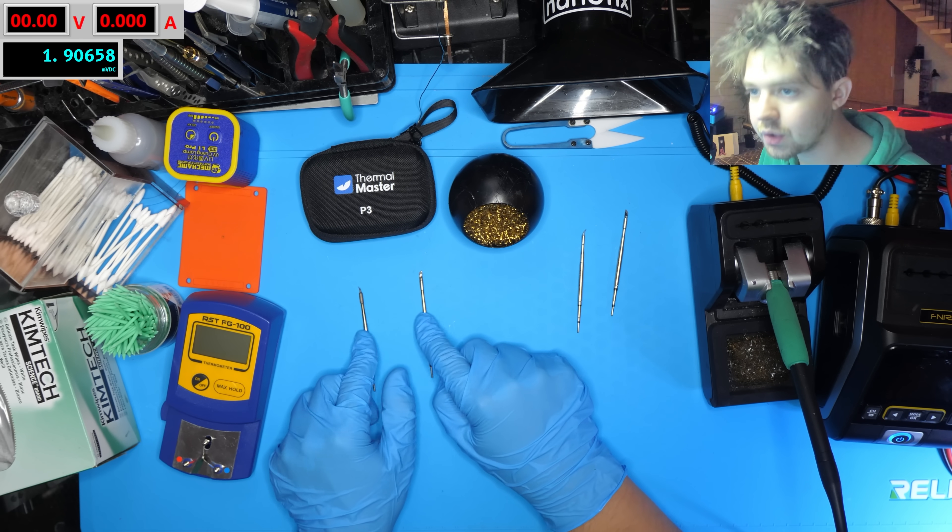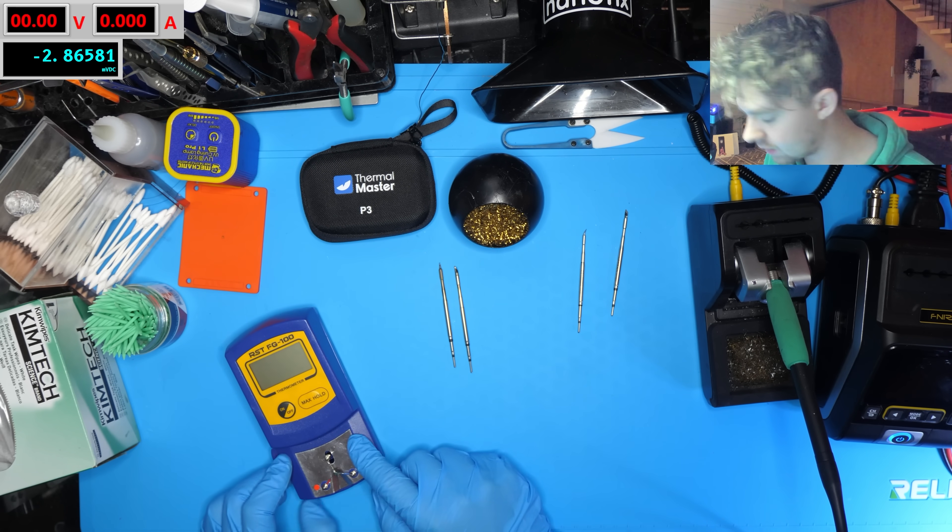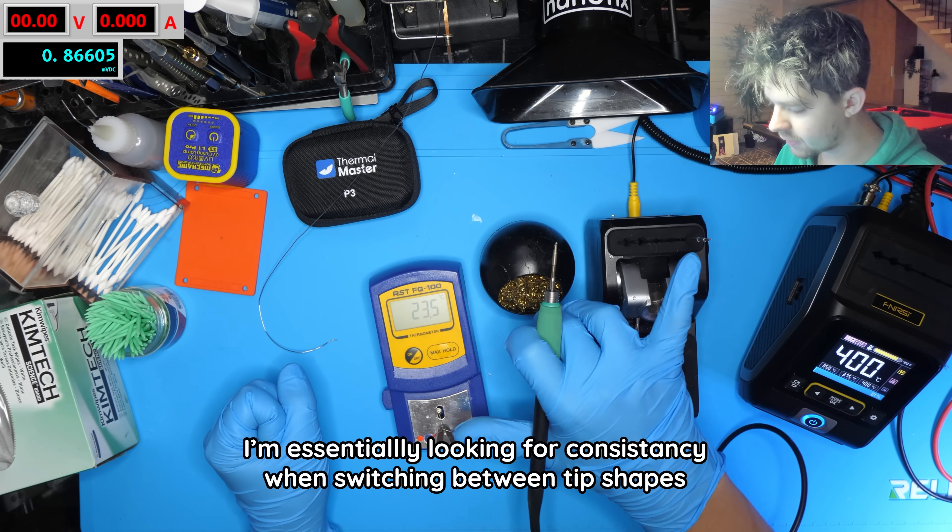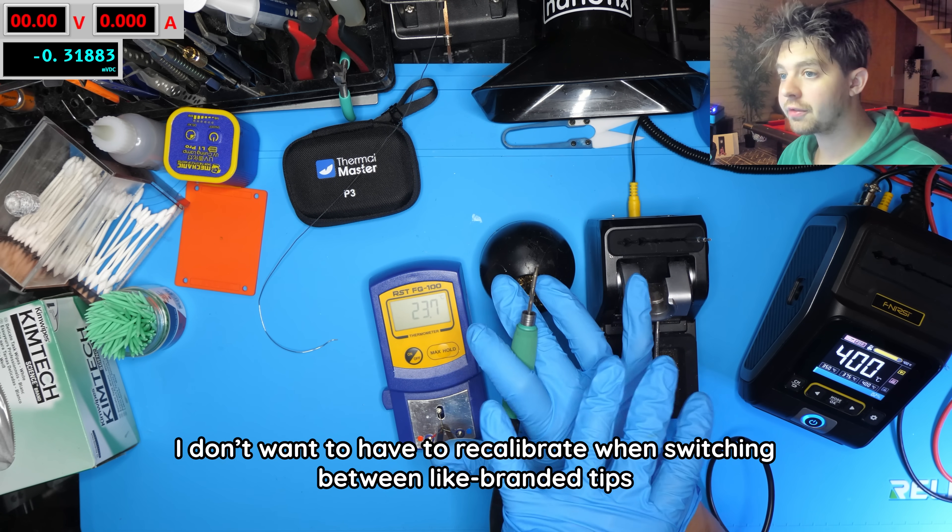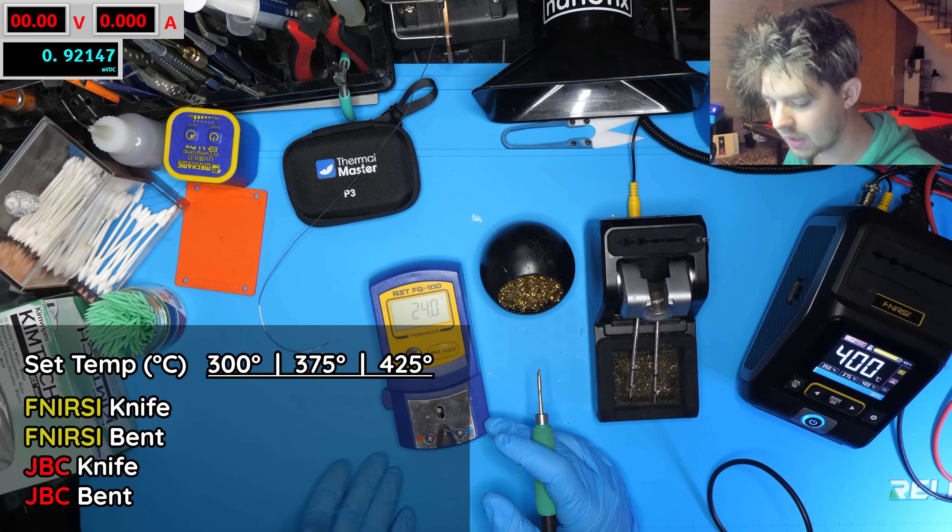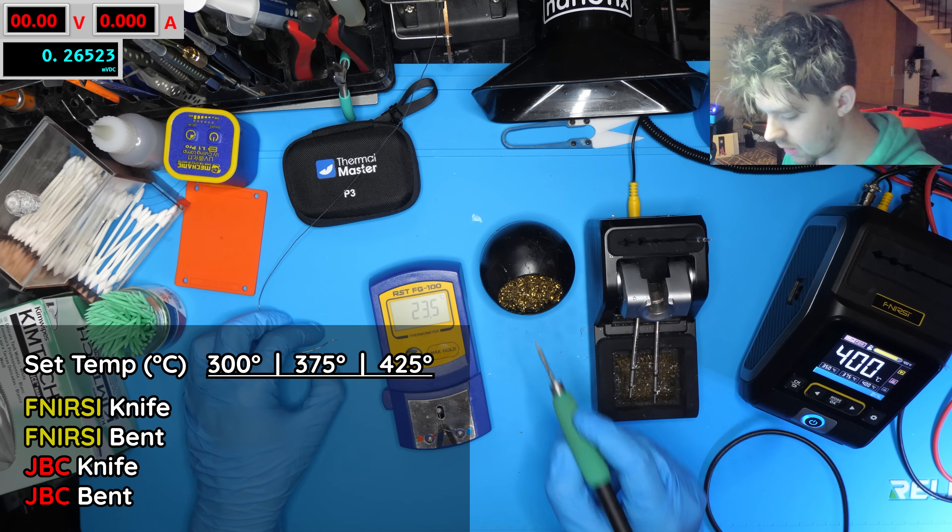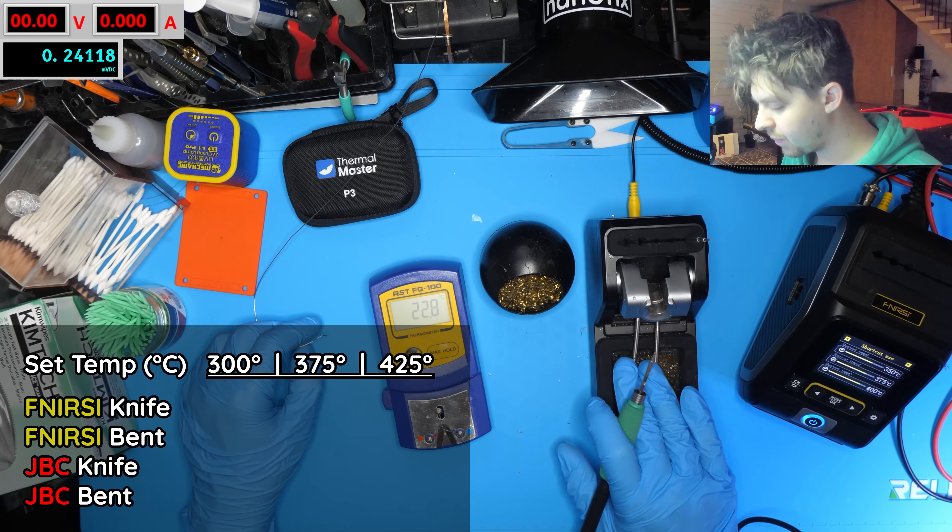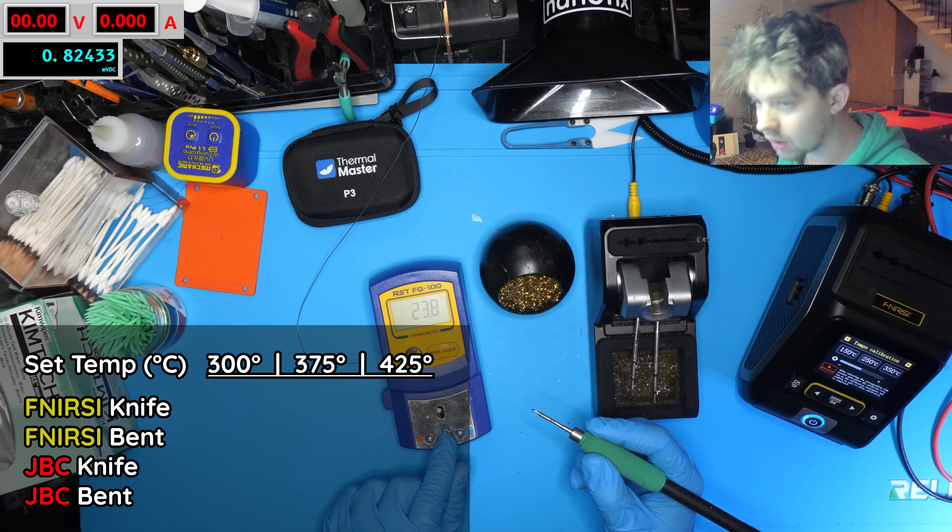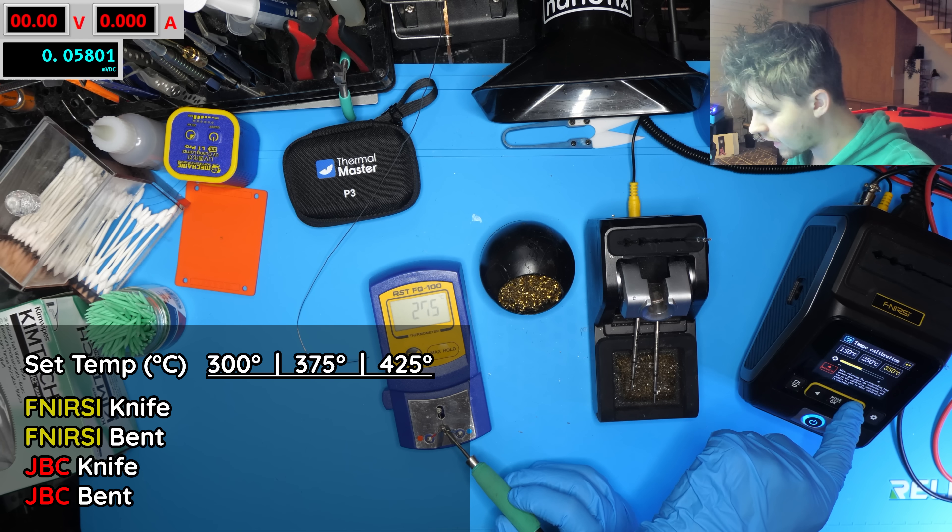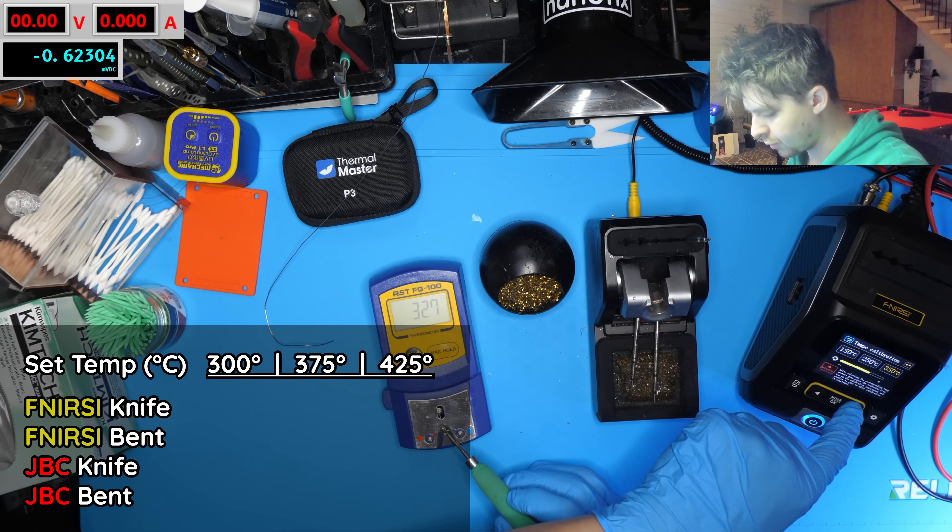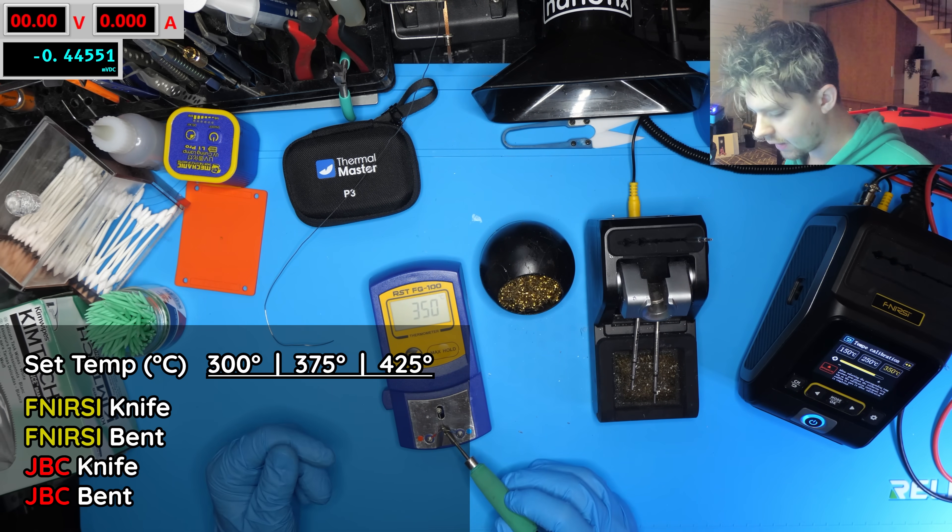Let's start with the difference between these two Furnersi tips on the tip thermometer. I'm going to calibrate this iron for the Furnersi tips and we're going to compare the difference between the two tip shapes, both still the Furnersi brand, and we're going to see at three different temperatures: 300, 375 and 425. We'll see how close it gets between the two tip shapes. I'm calibrating both of these with the knife tip first because I'm expecting the bent conical to underperform a little bit due to less surface area.